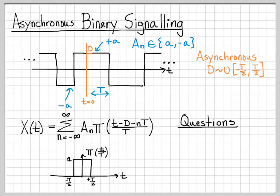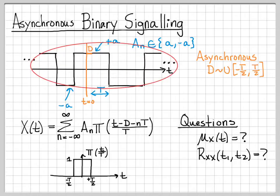We have some questions about this random process. What is the mean function? What is the autocorrelation function? These are similar questions we asked for the sinusoid random process, but now for this more practical communication signal we often encounter in digital communications. Let's do these computations in the next video.